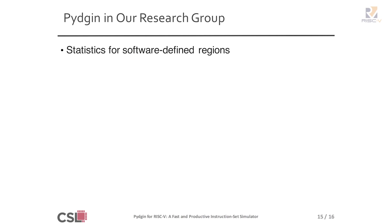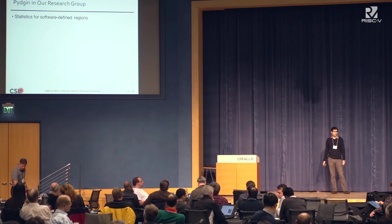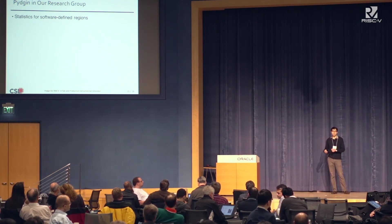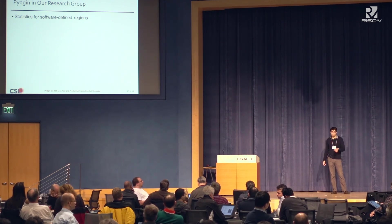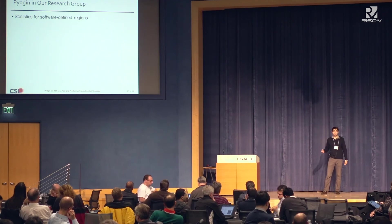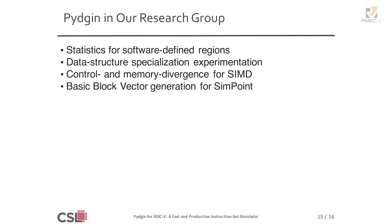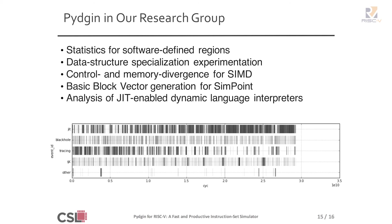Why did we build Pigeon? Primarily for our own group's needs. We use Pigeon to gather statistics for different program phases, experiment with data structure accelerators by instruction set specialization, gather statistics for control and memory divergence for SIMD or vector machines, perform SimPoint sampling, generate basic block vectors, and analyze program phases in a just-in-time-enabled dynamic language interpreter.